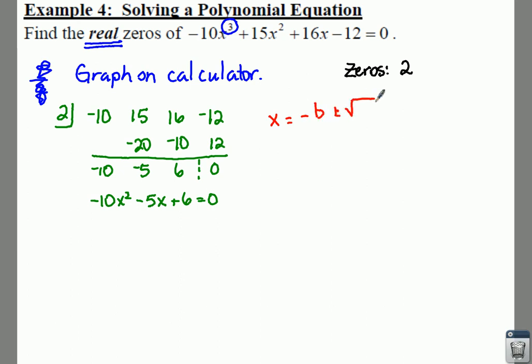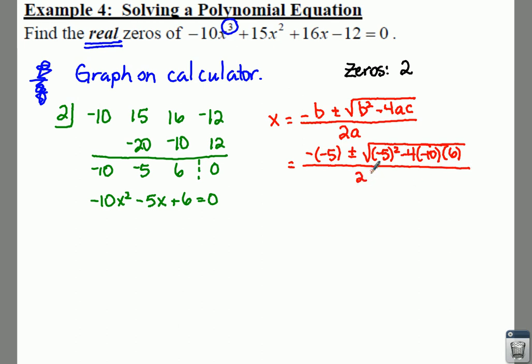Your quadratic formula is x equals -b plus or minus the square root of b² - 4ac all over 2a. So we're going to have -b, so your b is -5, so you have a -(-5) plus or minus square root of (-5)² minus 4 times a, which is -10, times a positive 6, all over 2 times -10.